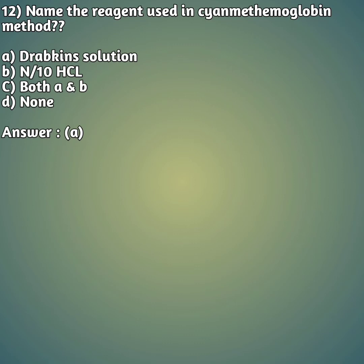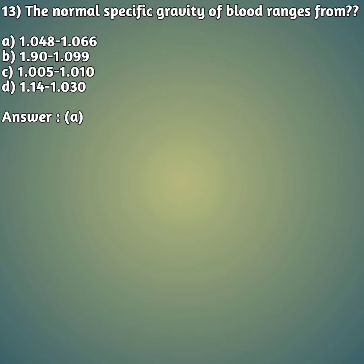Twelfth question: name the reagent used in the cyanomethemoglobin method. Option A: Drabkin's solution. Option B: N/10 HCl. Option C: both A and B. Option D: none. The right answer is option A — Drabkin's solution is used as the reagent in the cyanomethemoglobin method.